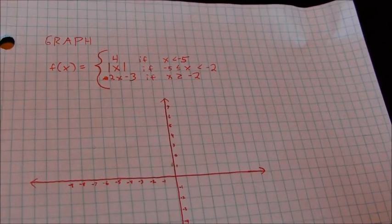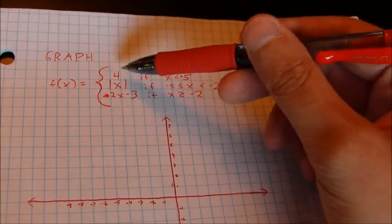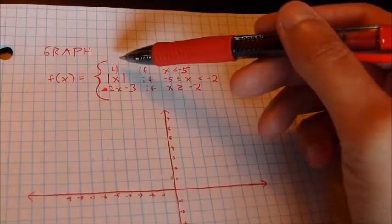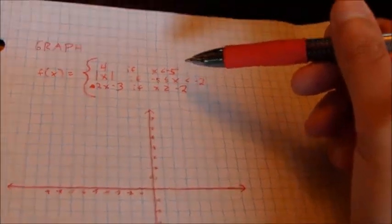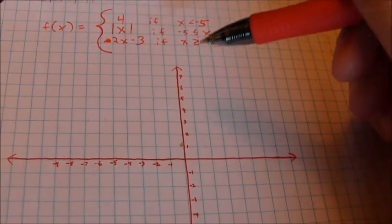So a few things here. First of all, you can really just plot points. For example, we're told f(x), same thing as y, that value is equal to 4 for all values where x is less than negative 5. So I can go in on the y-axis and I can just plot values at 4.